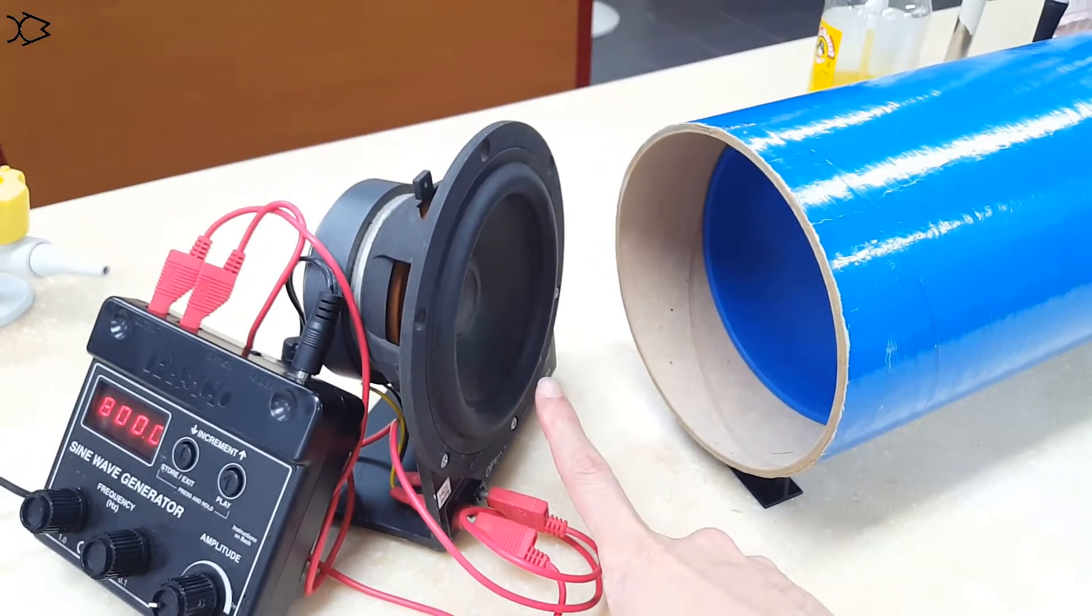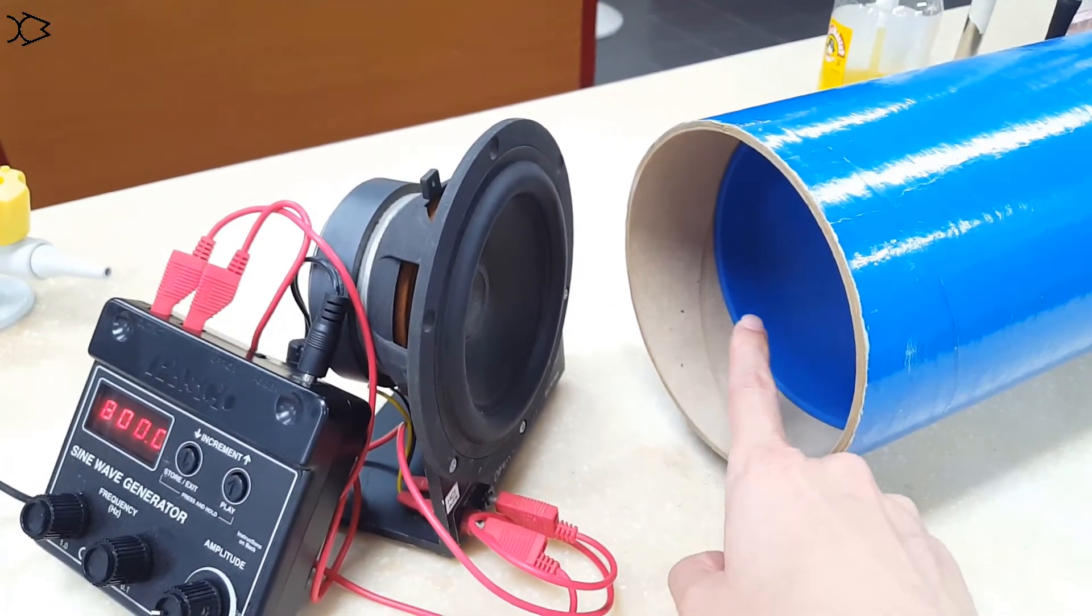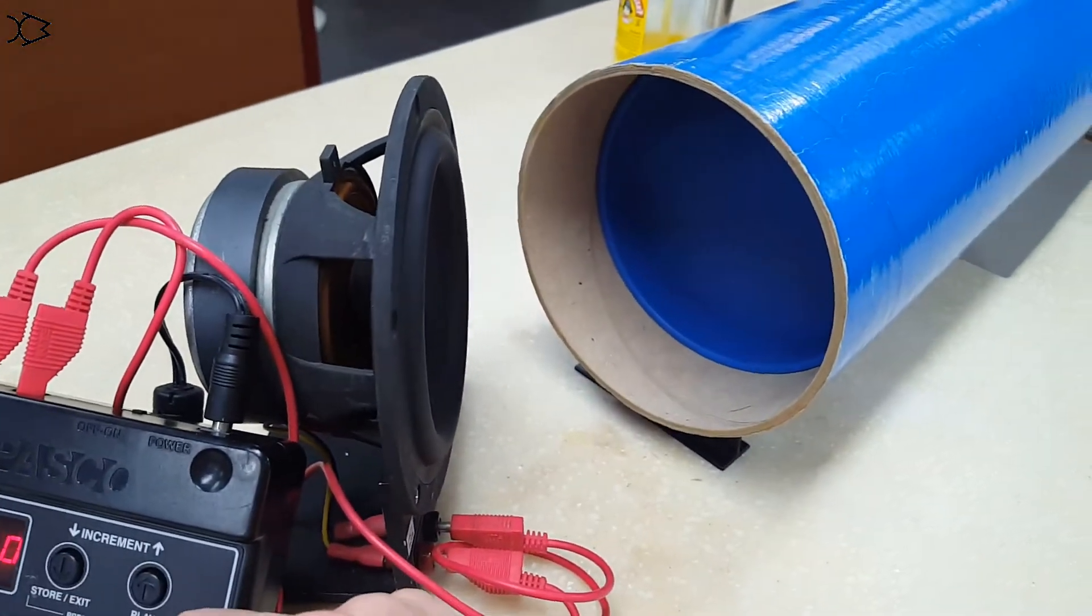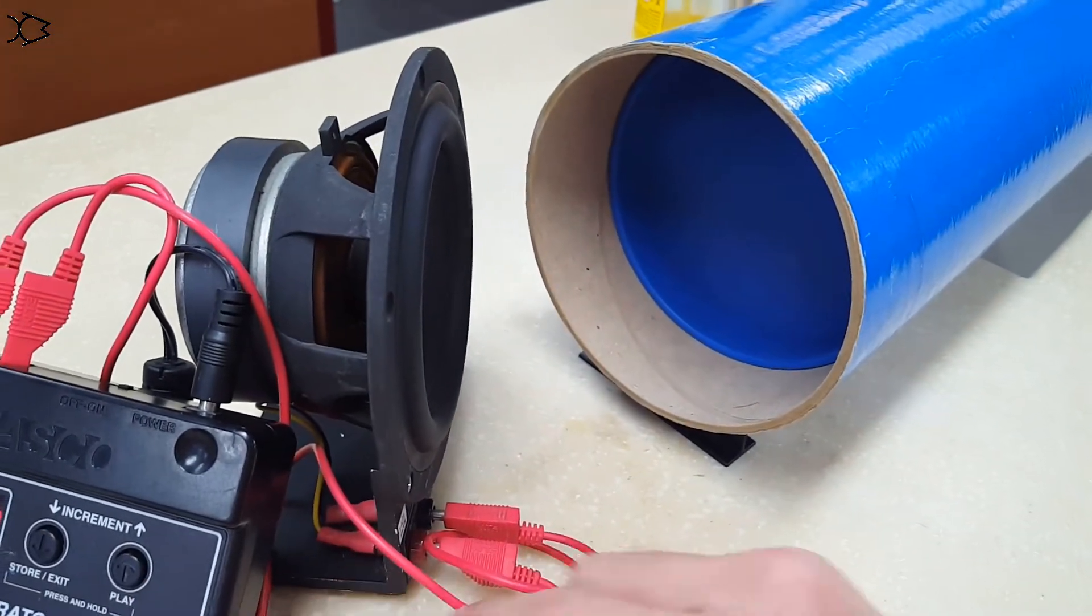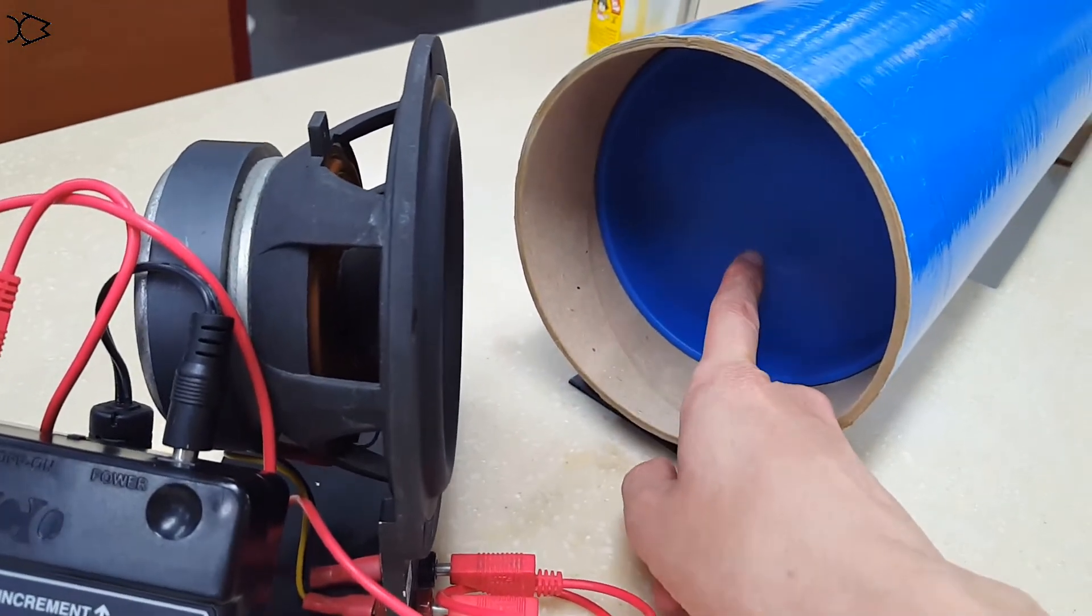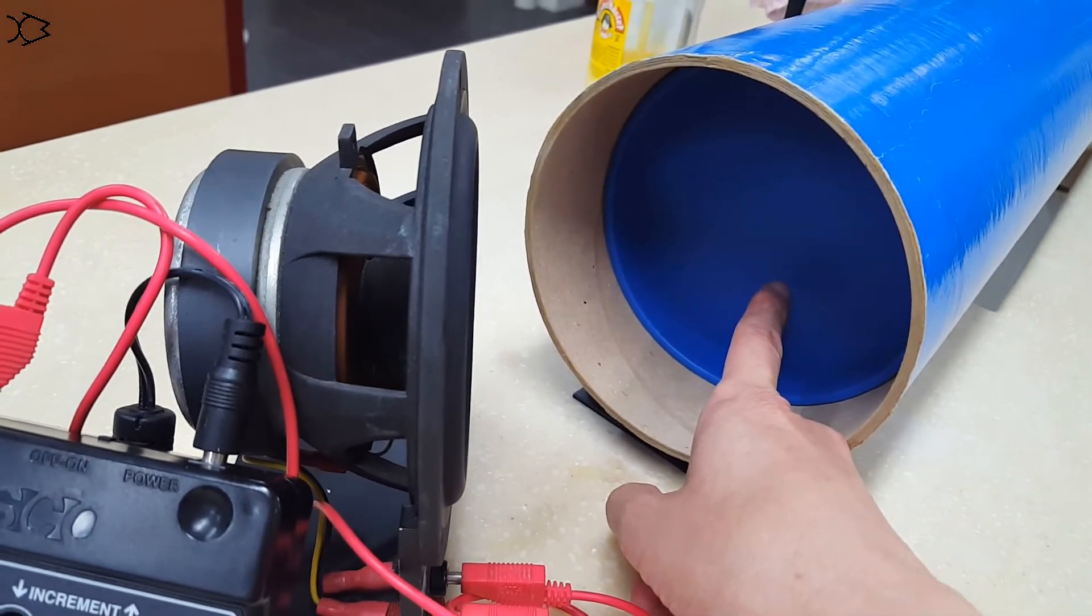Now a fraction of this sound wave is going to find its way into the tube. Let me lower the volume first. So when the sound wave reaches the closed end, what is it going to do? It's going to reflect.